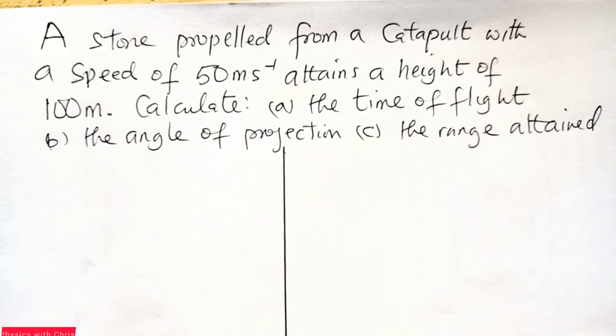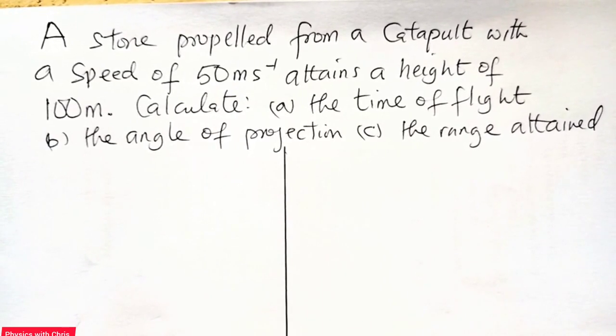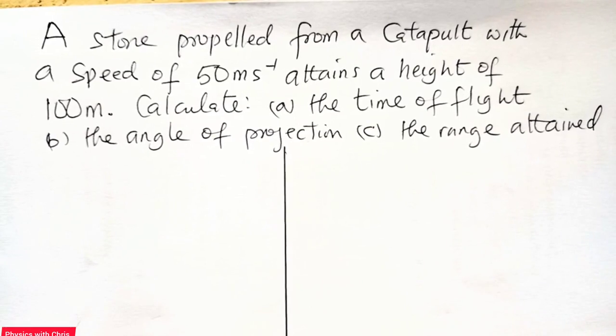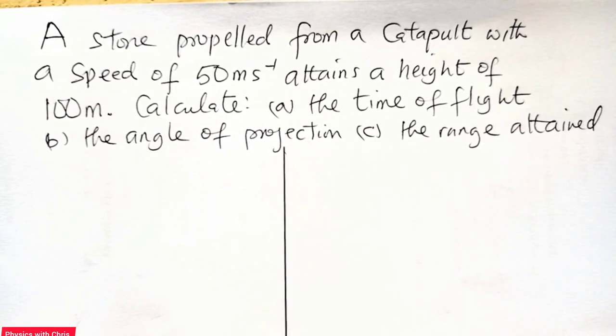Now a stone propelled from a catapult with a speed of 50 meters per second attains a height of 100 meters. Calculate the time of flight, the angle of projection, and the range attained.